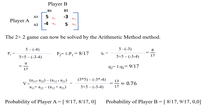Then, the optimal strategy of player A is (9/17, 8/17, 0). Similarly, the optimal strategy of player B is (8/17, 9/17, 0, 0). And the value of the game is 0.76. So, this is the solution. Thank you.